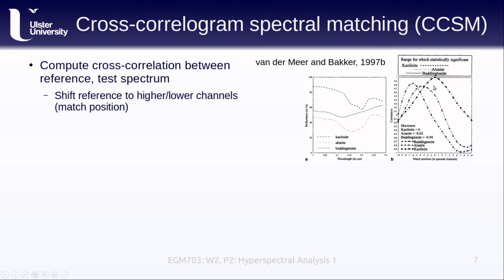With CCSM, we compute the cross-correlation between each spectrum directly, but we also shift the reference spectrum to higher and lower channels, or match positions. This gives us an idea of where the actual peak correlation is, how significant that peak is, and how skewed this correlation curve is. All of this helps to protect somewhat against false matches. A higher correlation value, especially at match position zero, means that we have a better match between the test and reference spectrum. The example here, for kaolinite, shows that we have a high match correlation equals one for kaolinite, as we would expect. We can also see where the peaks for the other two end-members are here.